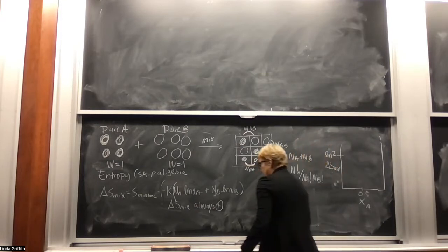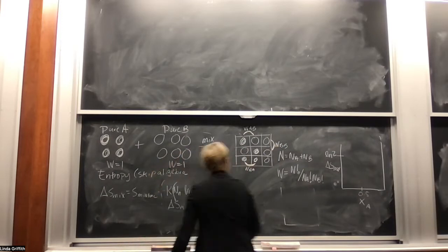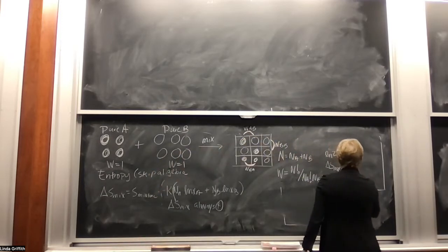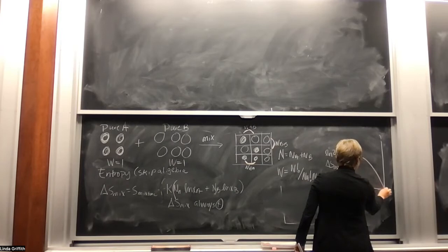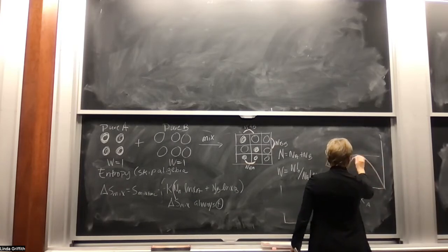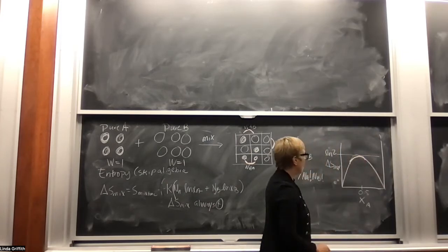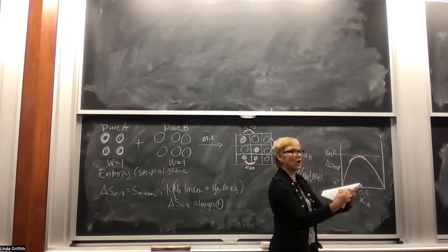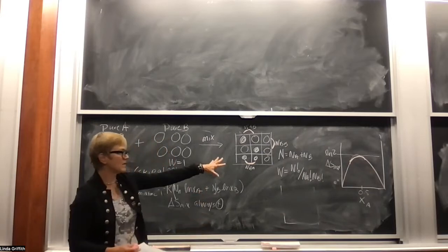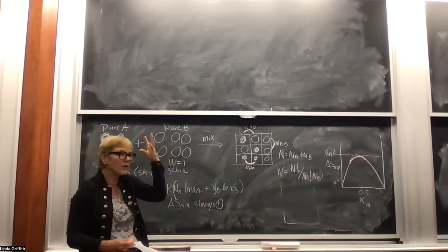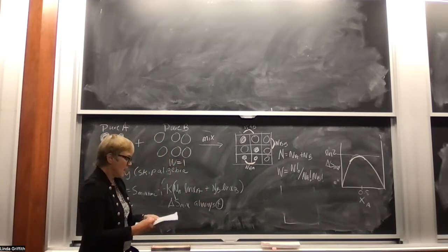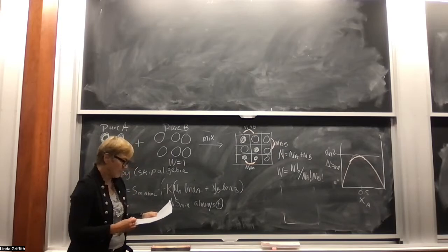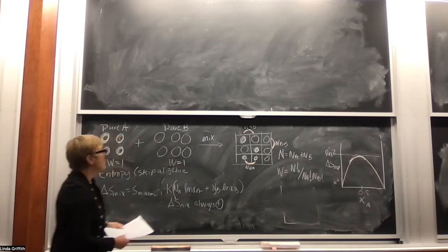We can plot delta S mix as a function of mole fraction. It goes up to a maximum of log 2 around x_a = 0.5. The more equal your mole fractions, the more entropy you get from mixing — just hold that as a snapshot to think about the importance of this in mixing.